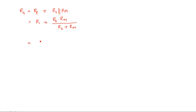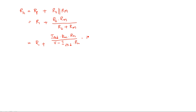R1 plus R2 — that is equal to: now substitute whatever R2 value we got in the previous expression. Substituting R1 plus R2, where R2 equals IFSD times RM times RH divided by V minus IFSD times RM, all divided by R2 plus RM. So again R2 is IFSD times RM times RH divided by V minus IFSD times RH, plus RM.